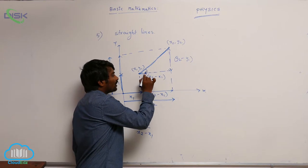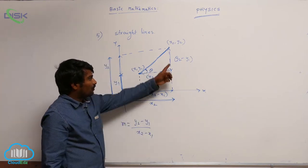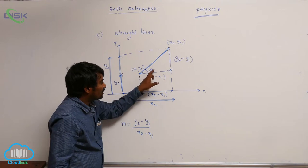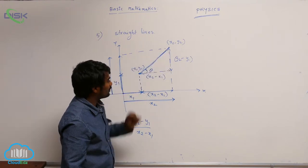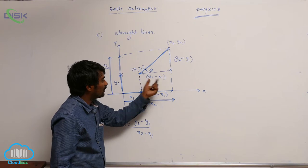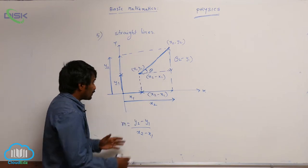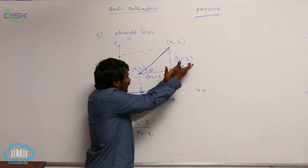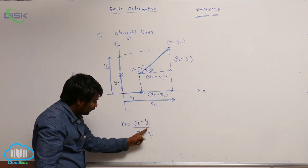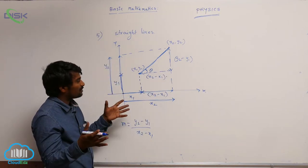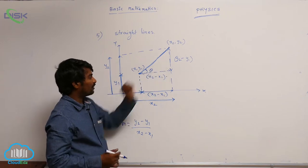Suppose if you take this angle as theta, from this right angle triangle, for this angle theta, y2 minus y1 is the opposite side and x2 minus x1 is the adjacent side. So opposite side by adjacent side gives tan theta.